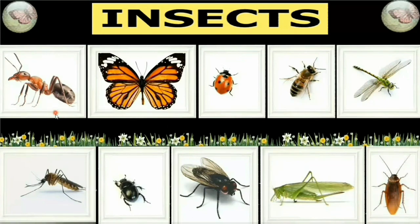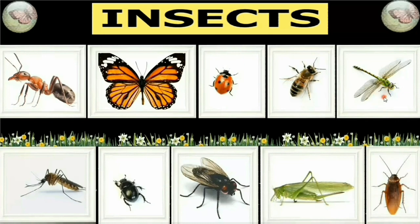Now it's your turn. What is the name of this insect? Ant. Next. Which insect is this? Butterfly. Next. What is this? Ladybird. Next. What is the name of this insect? Honeybee. Next. Which insect is this? Housefly.